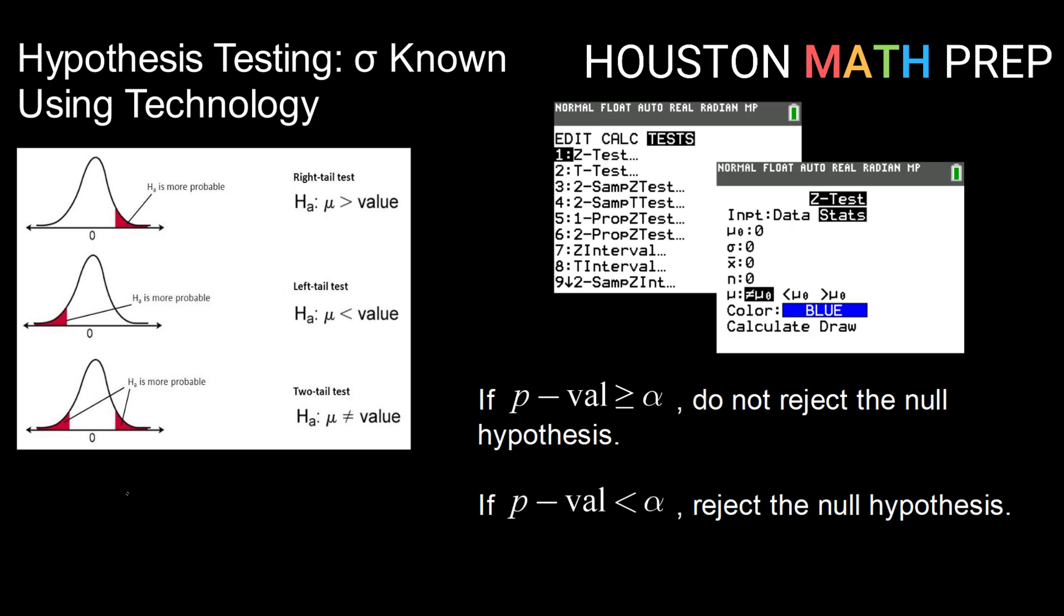So when we have our rejection region model, we know that a right-tailed test gives us an upper-right rejection region, a left-tailed test gives us a lower rejection region, and a two-tailed test we have rejection regions both in the left and the right tail.